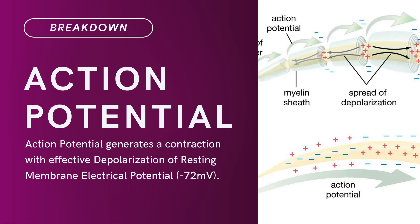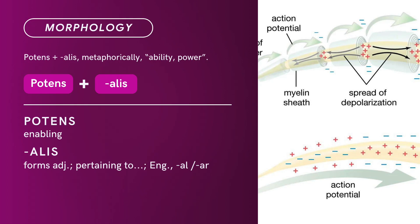Compound Term: Action Potential. The word focus is 'Potential.' Brief Definition: Action Potential initiates a contraction by effective depolarization of resting membrane electrical potential from negative 72 millivolts. Term Morphology: compound of potence plus -alis. Metaphorically, ability or power. Potence means enabling. -Alis is a suffix that forms adjectives pertaining to.